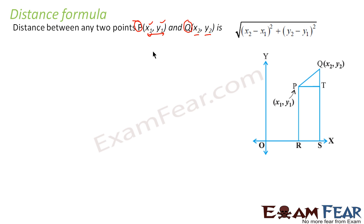Now I will derive this formula first. It may be a little boring but bear with me. I will derive this formula and then we will use it in day-to-day life. Derivation is very simple. If these are two points P and Q and you want to find the distance, you join P and Q and draw a right triangle. Then we can use the Pythagorean theorem to find PQ.